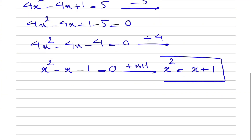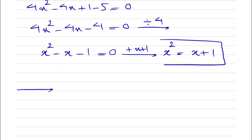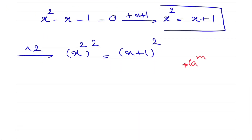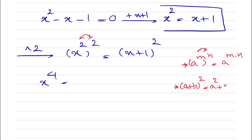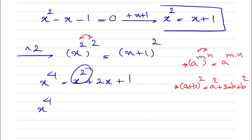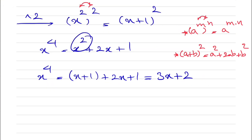To find x⁴, we square both sides of x² = x + 1: (x²)² = (x + 1)², which gives x⁴ = x² + 2x + 1. Substituting x² = x + 1, we get x⁴ = (x + 1) + 2x + 1 = 3x + 2. So x⁴ = 3x + 2.